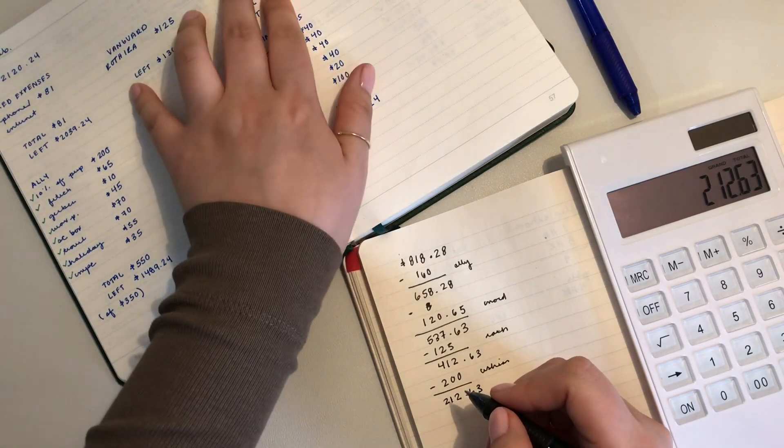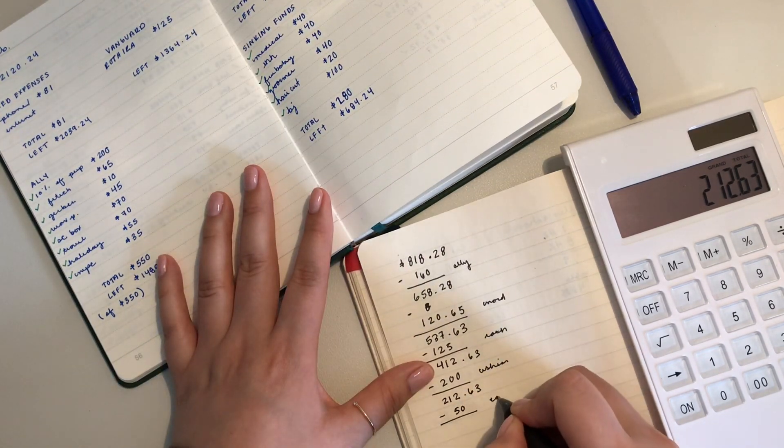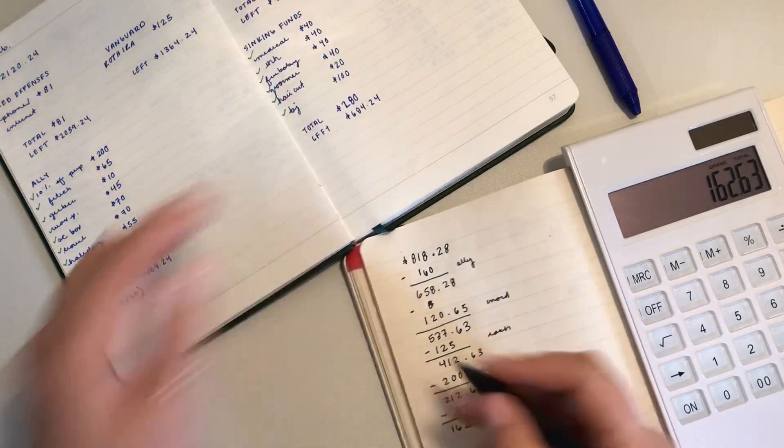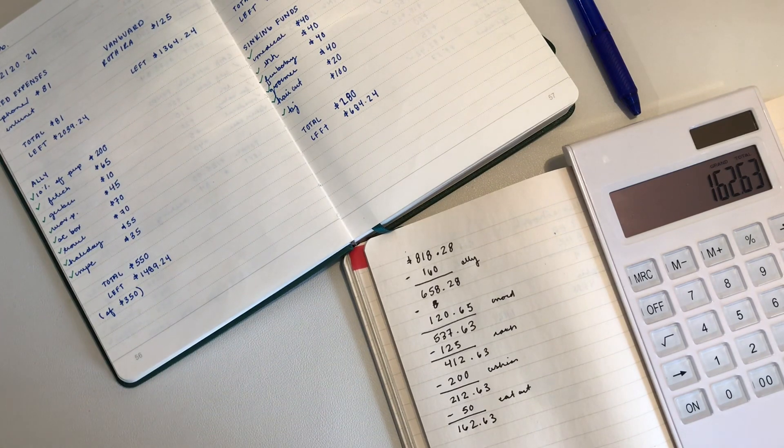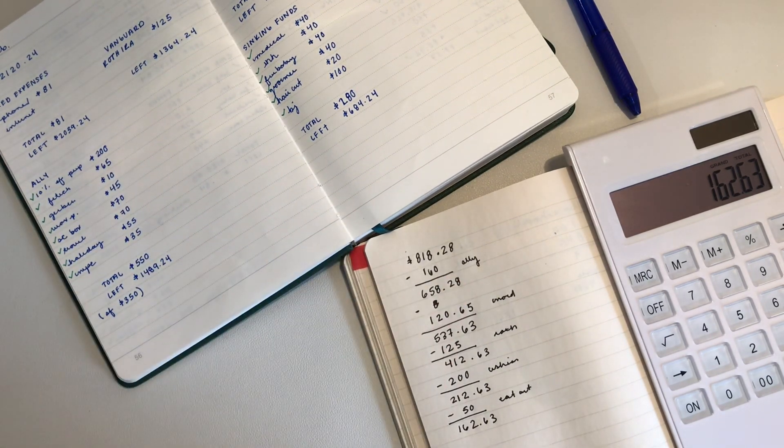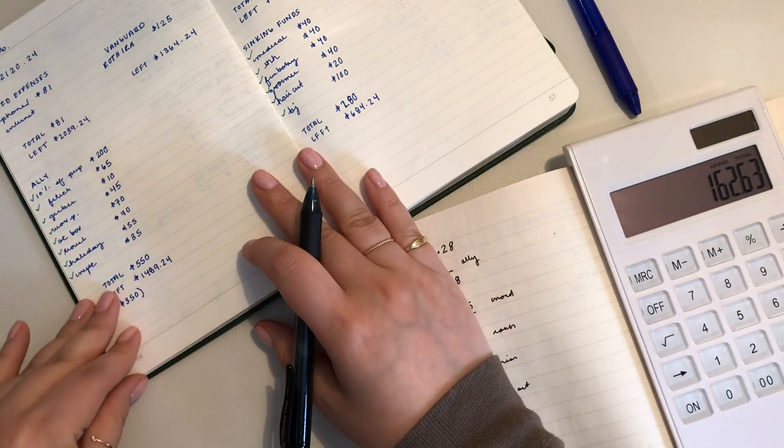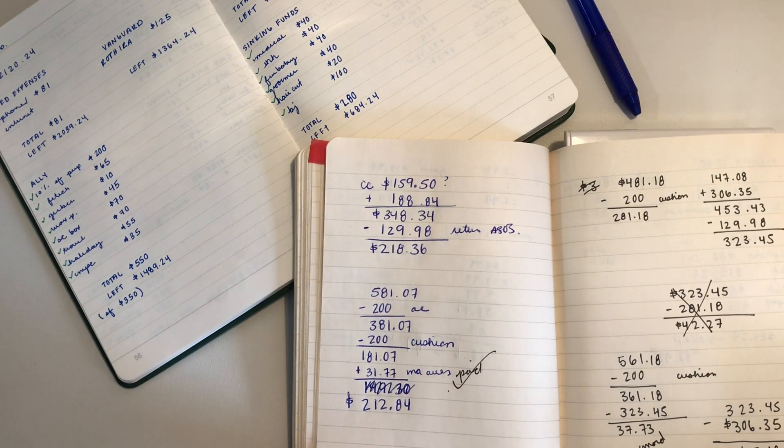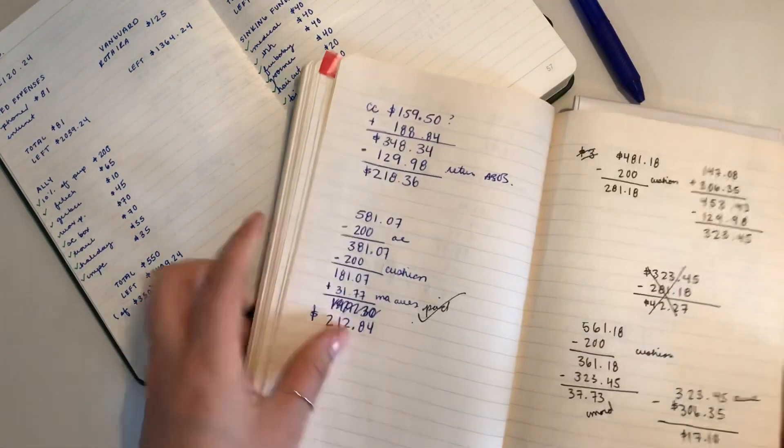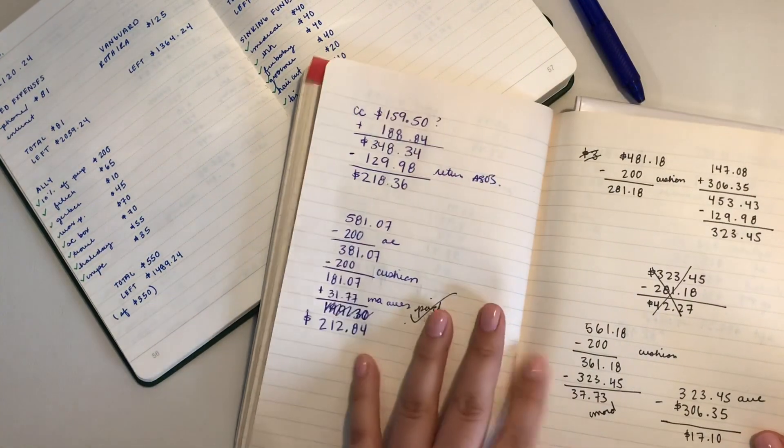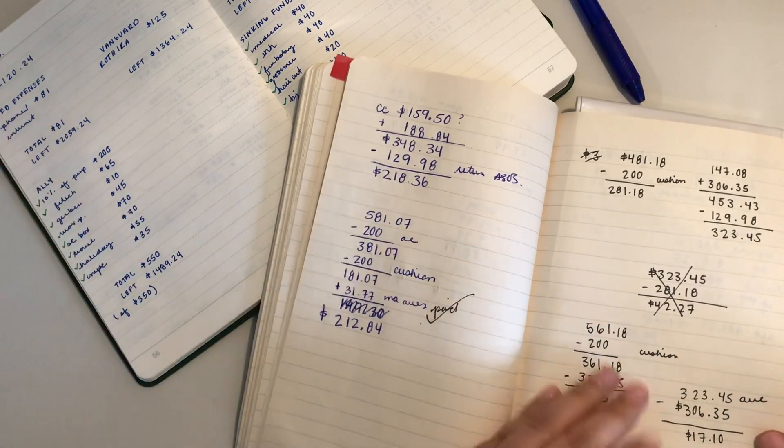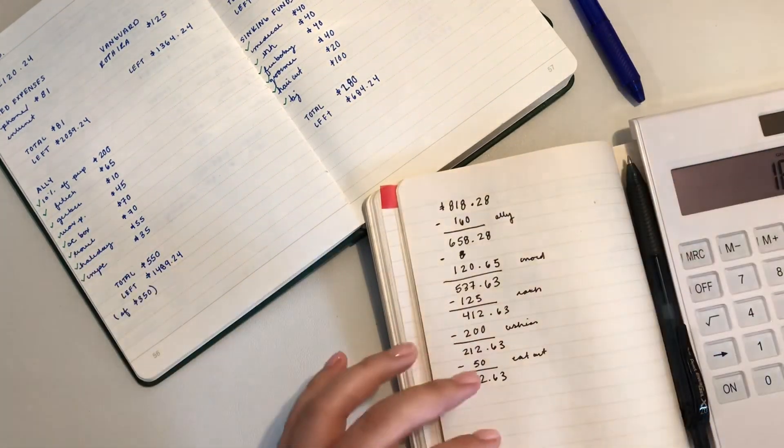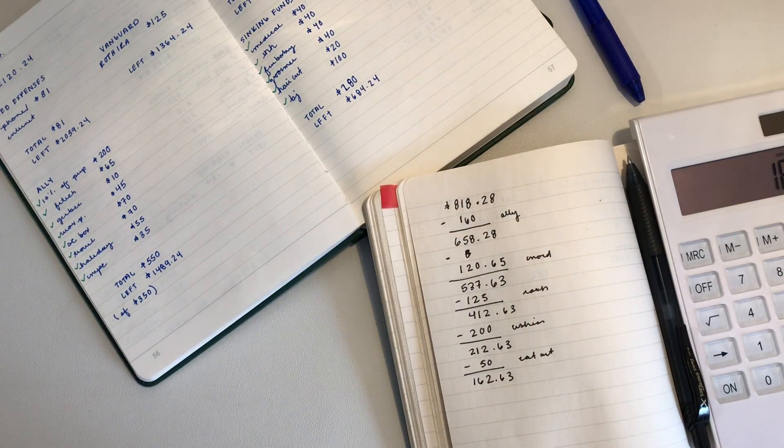Plus my Nordstrom credit card is getting $120.65 pulled out. My Nordstrom total is $120.65 to pay off that card. Minus $120.65, that's $537.63. I also know my Roth IRA hasn't been pulled out yet, $125 for Roth. Minus $125, that's $412.63. My cushion is $200, so that can't be touched unless it's an emergency. $212.63. My eating out has $50 in the bank. Minus $50, that's $162.63.